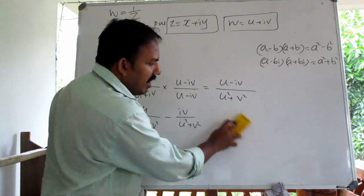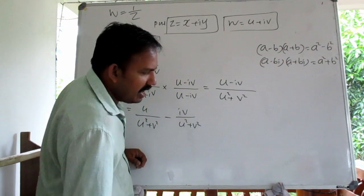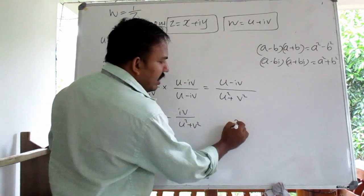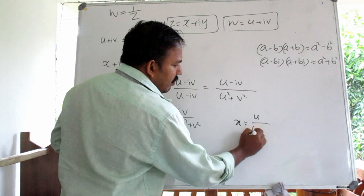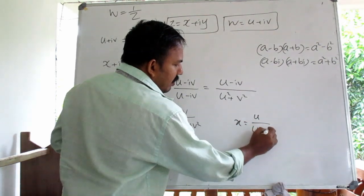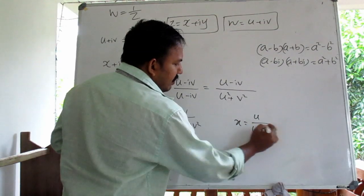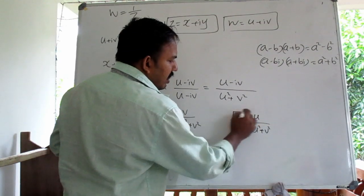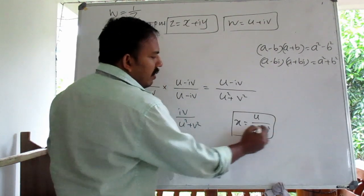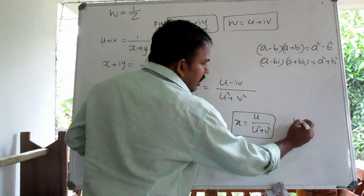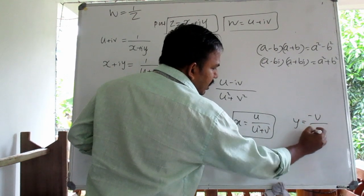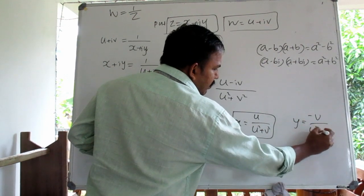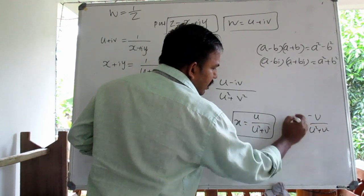Therefore, x is equal to u divided by u squared plus v squared, and y is equal to minus v divided by u squared plus v squared.